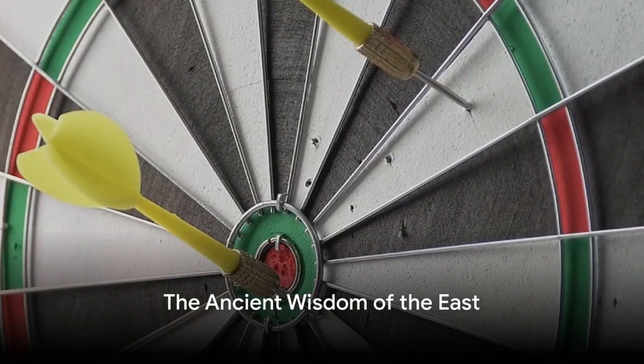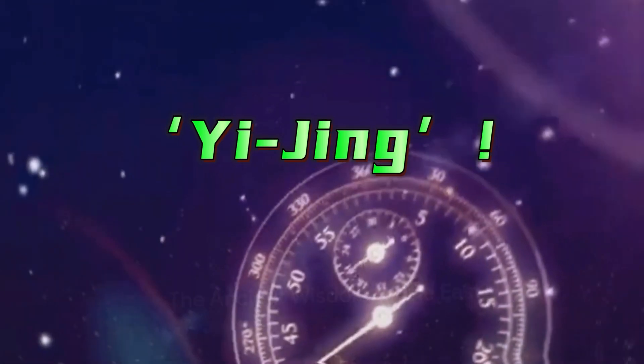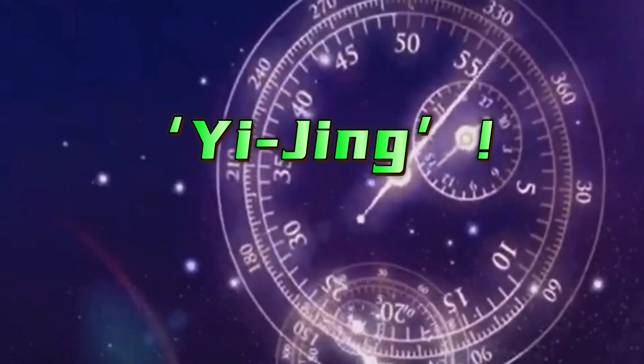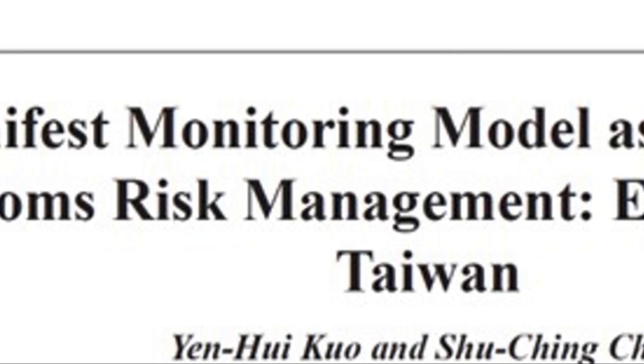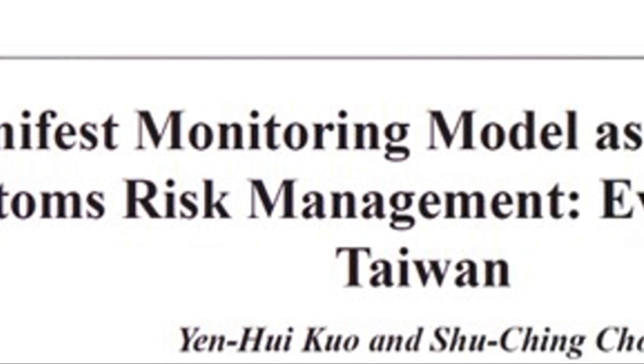Could the ancient wisdom of the East hold the key to our modern dilemmas? Could the binary system of the Yijing, the ancient Chinese text, hold the answer to the question of predetermined destinies? Ponder this.